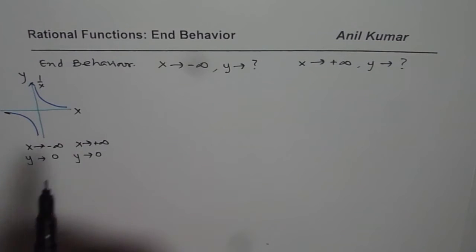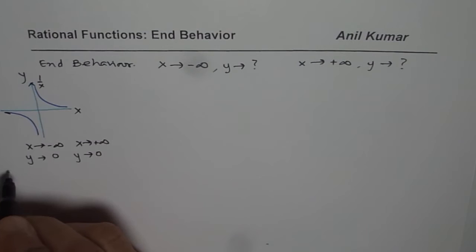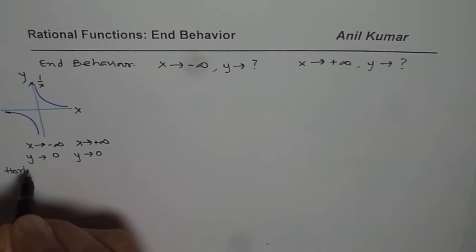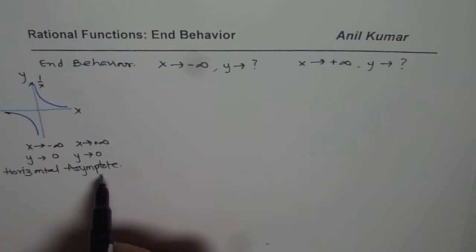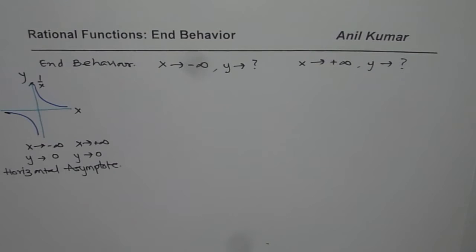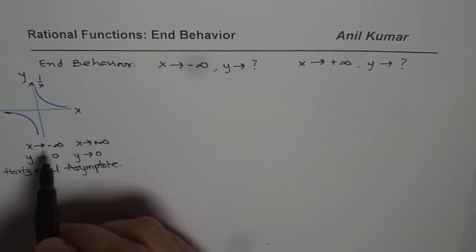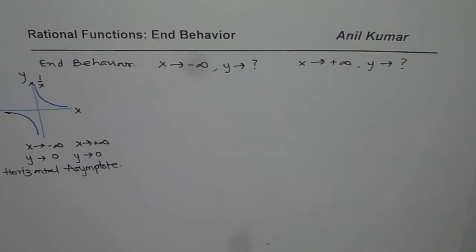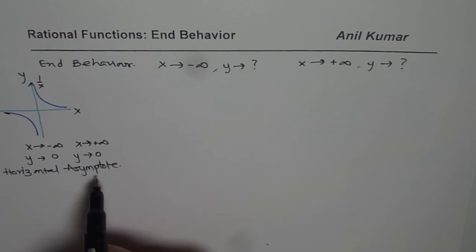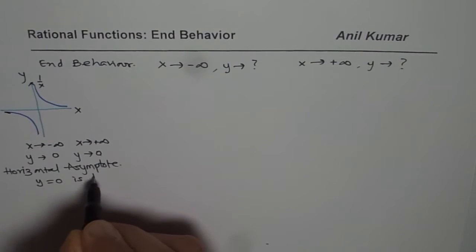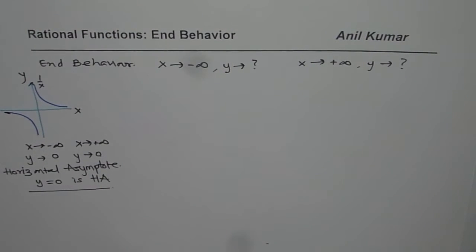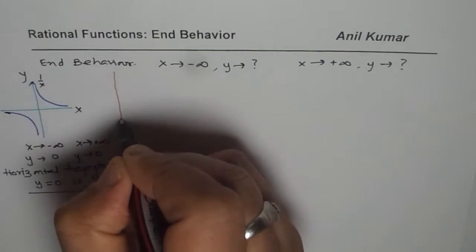Now if y approaches a fixed value, we say that there is a horizontal asymptote. A horizontal asymptote is the value which the function approaches, but it is never there. So we are approaching 0 but we are never there, when x approaches an infinitely large value — positive or negative. A function may have an asymptote on one side or on both sides, and it could even have different asymptotes. So y equals 0 is the horizontal asymptote here.